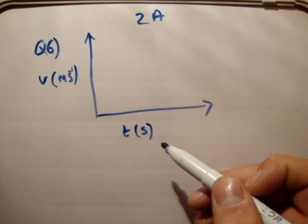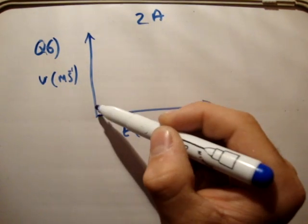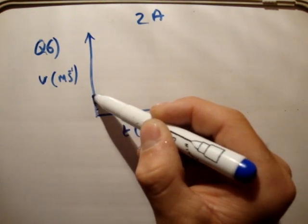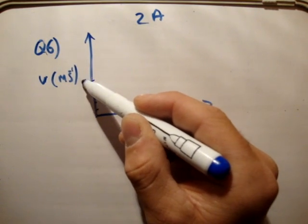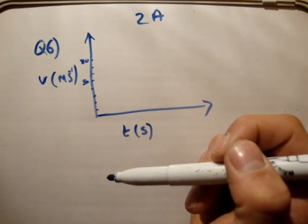And we know that it starts at 80 meters per second and goes down to 50 meters per second, so say 10, 20, 30, 40, 50, 60, 70, 80, like that.